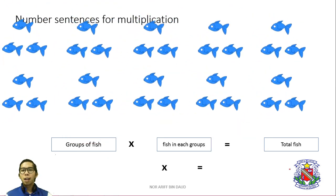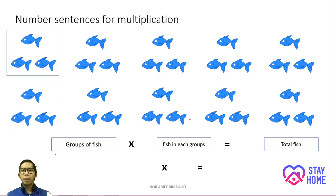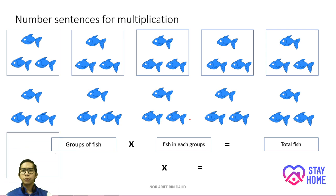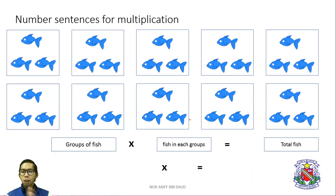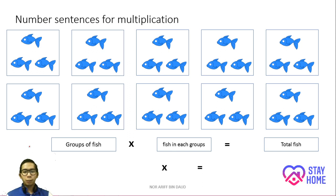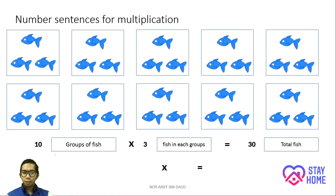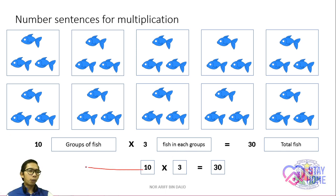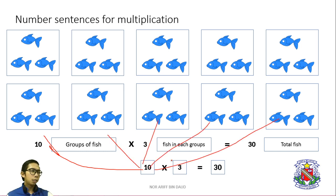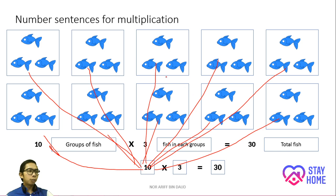Next slide I have a fish. So, how many groups? 1, 2, 3, 4, 5, 6, 7, 8, 9, 10 groups of fish. I must put what number here — whether 3 or 10? I put 10, because we have 10 groups of fish here. And then 3 fish in each group, so the total will be 30. The answer will be 10 times 3 equals 30. 10 stands for 10 groups of fish, and 3 is the number of fish in each group. Very easy to understand this topic — make sure you pay attention.